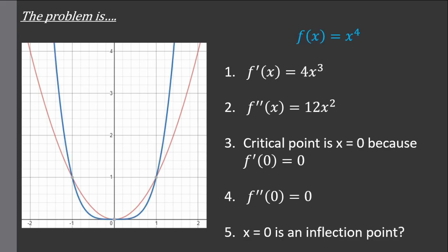But what if you take another function, say x to the power of four? If you repeat the same process, you'll see that at the critical point x equal to zero, the second derivative is also zero — but can you conclude that it is neither? Well, if you look at the graph, this blue line, you'll see it is clearly a local min.